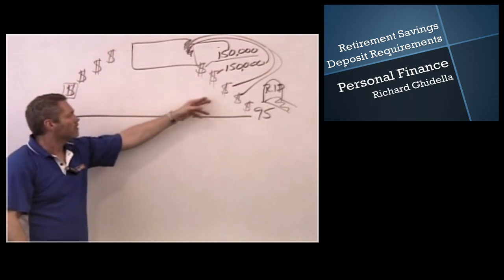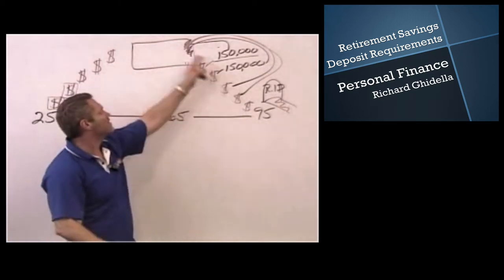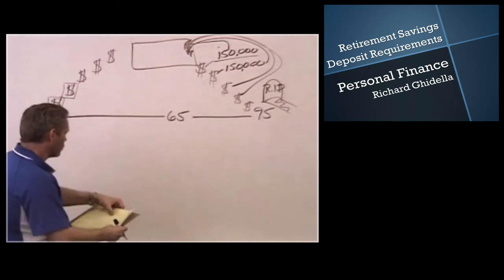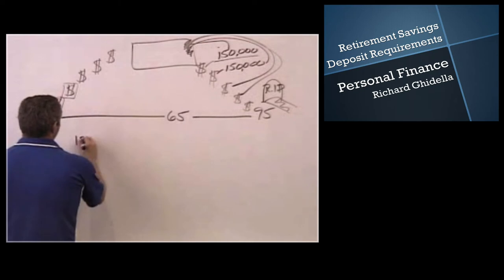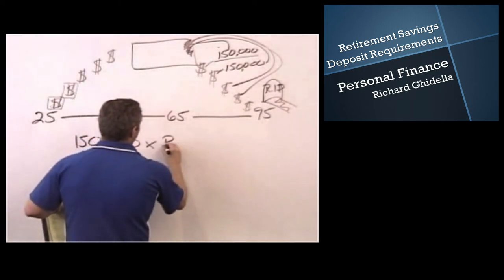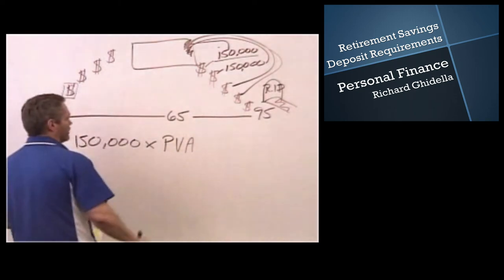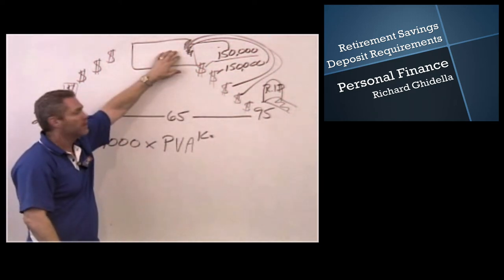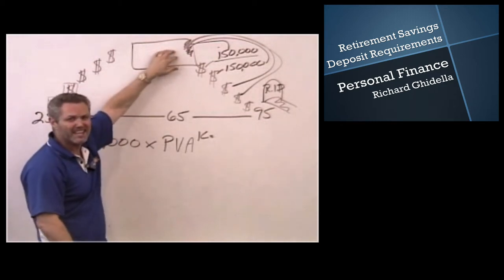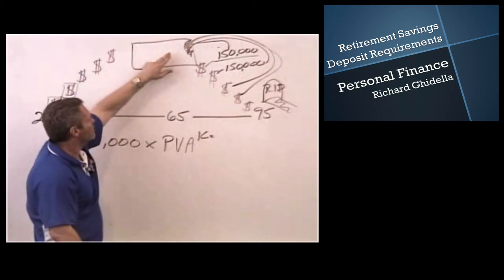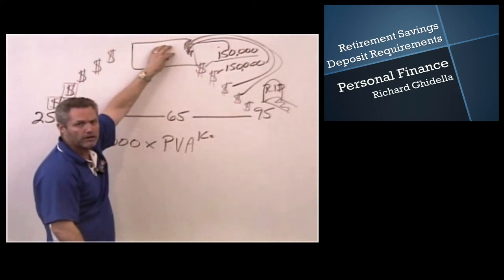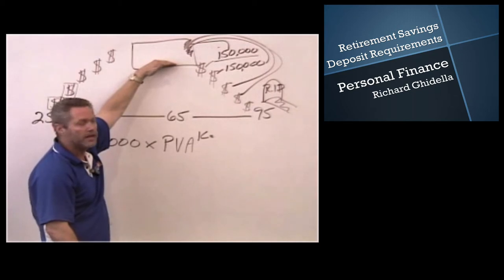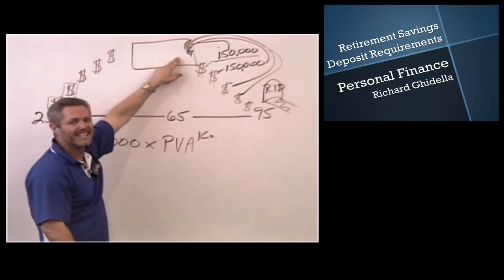So if that's an annuity and we're backing things up, then to get this number, what I want to use is the present value of an annuity. So we're going to take $150,000 times the present value of an annuity. K is going to equal how much we're going to make in these investments. How much money is being actually generated within this fund while I'm in retirement?